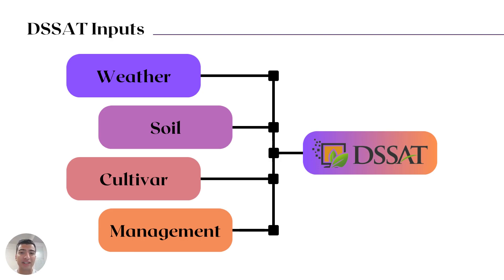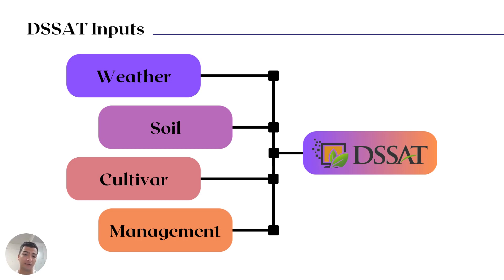This relates to digitalization because we can digitalize part of our agricultural side. With a series of inputs and initial conditions, we can have a good approximation of what will happen if we really performed that experiment in a field — but in this case we are doing it in software. It's very useful because we don't need to waste time and resources when we can have a very good prediction.